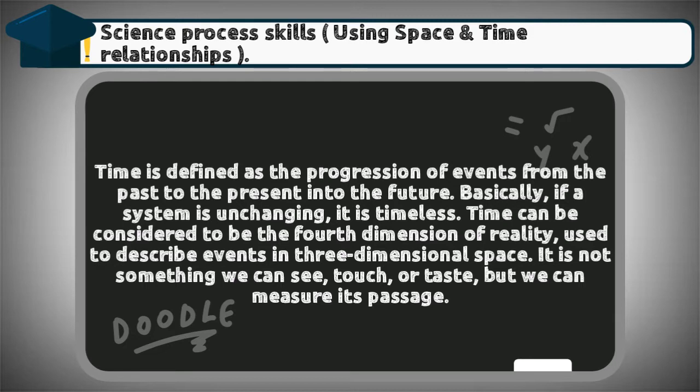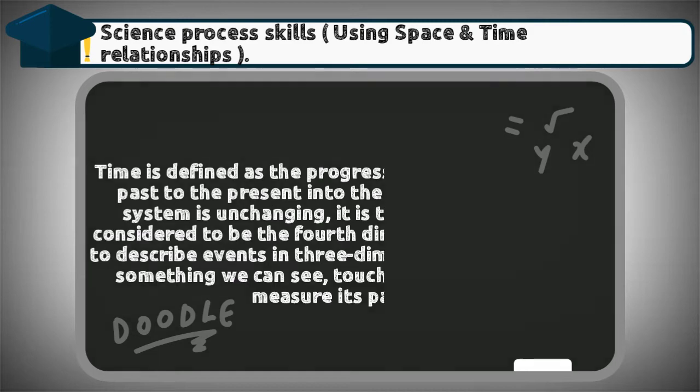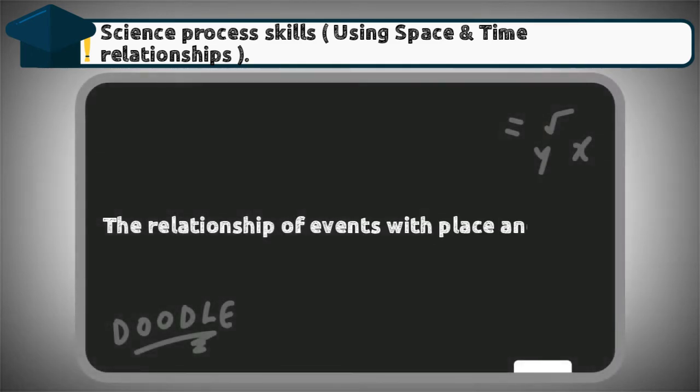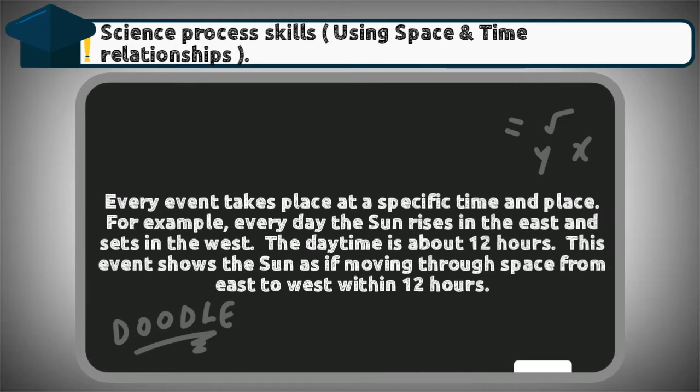three-dimensional space. It is not something we can see, touch, or taste, but we can measure its passage. Using space and time relationships: the relationship of events with place and time. Every event takes place at a specific time and